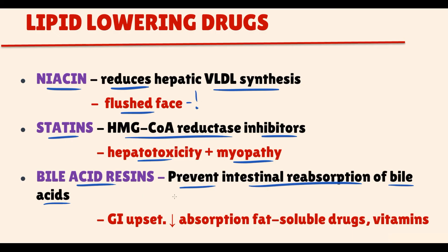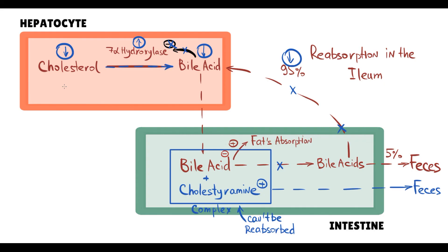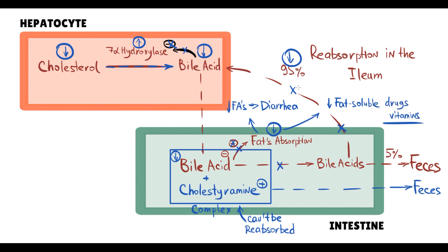The side effects of bile acid sequestrants are GI distress and decreasing absorption of fat-soluble drugs and fat-soluble vitamins. Hepatocytes cannot keep up with the rapid tempo of bile acid excretion, and without bile acids, everything fat-soluble cannot be absorbed. This results in decreased absorption of fats, causing more fat to remain in the intestine and producing diarrhea, and absorption of fat-soluble drugs and vitamins will also decrease.